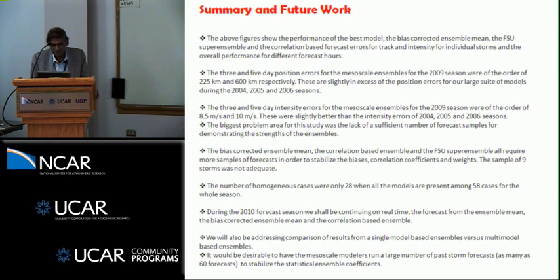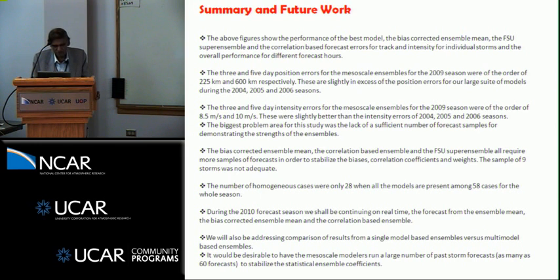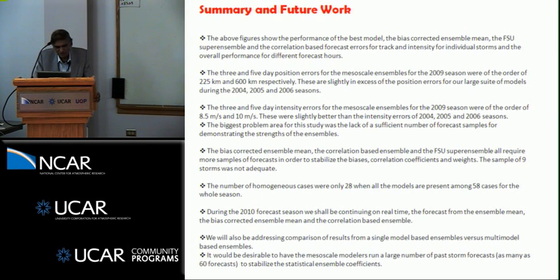The three- and five-day intensity errors for the mesoscale ensembles for 2009 were on the order of 8.5 meters per second and 10 meters per second, slightly better than previous intensity errors. The biggest problem in this study, of course, is the lack of sufficient number of forecast samples. It would be desirable to have the mesoscale modelers run a large number of past storms — as many as 60 forecasts — to establish the statistical ensemble coefficients. Then we will be able to do as well as we have done for the large-scale counterparts.